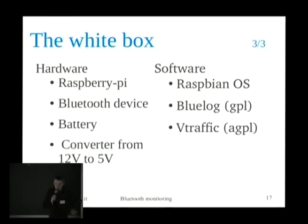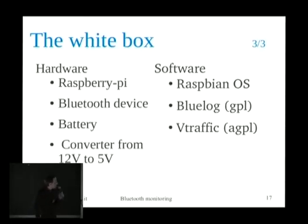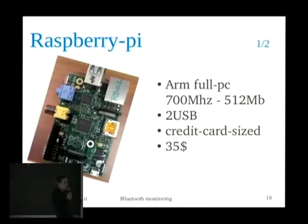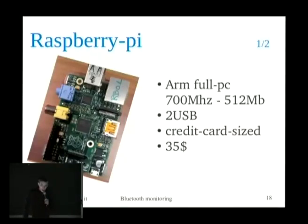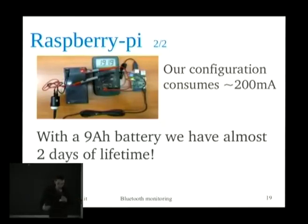From the software point of view, we have the operating system — I used Raspbian — then we have bluelog. Bluelog runs on the prototype and is the tool that discovers new devices. We also have vtraffic, which is a web application that shows the analysis we have done. The Raspberry Pi is really cheap, very small, and importantly it consumes very little energy — enough to give us at least two days of battery lifetime, which was sufficient for our empirical tests.